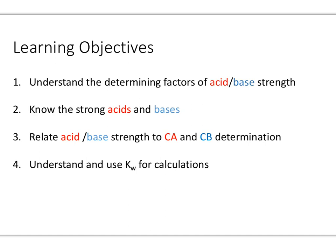After this video lecture, students are going to be able to understand the determining factors associated with acid-base strength. Students are going to know the strong acids and bases, and they'll be able to relate acid and base strength to specific conjugate acid and conjugate base determination. Finally, students will be able to use and understand calculations using Kw at specific temperatures and in pH conditions of 7.00.